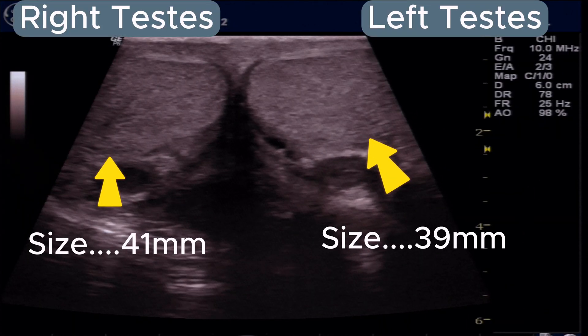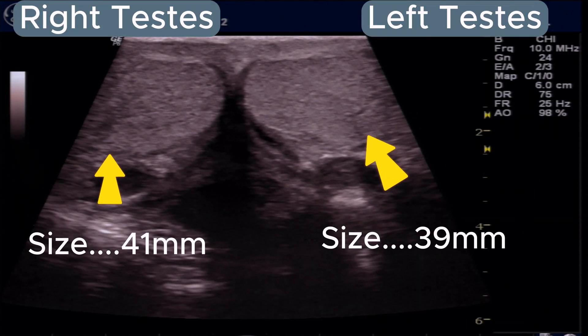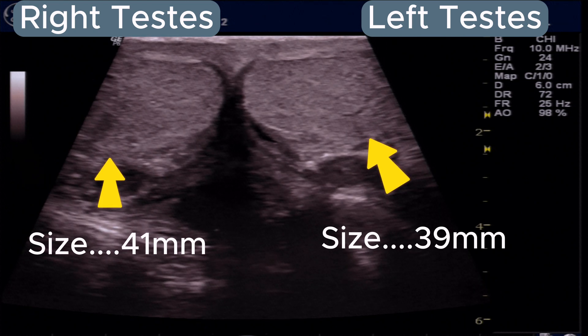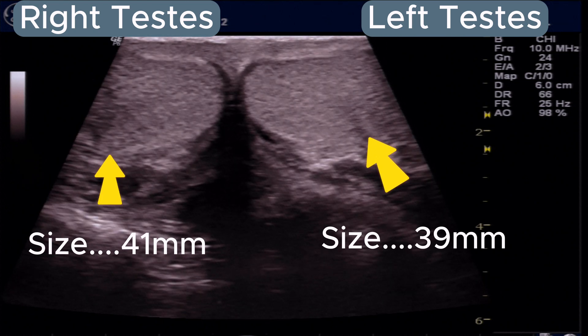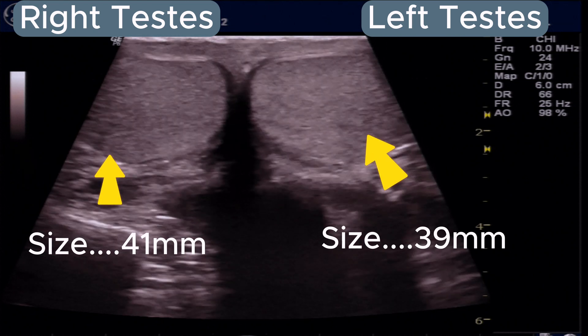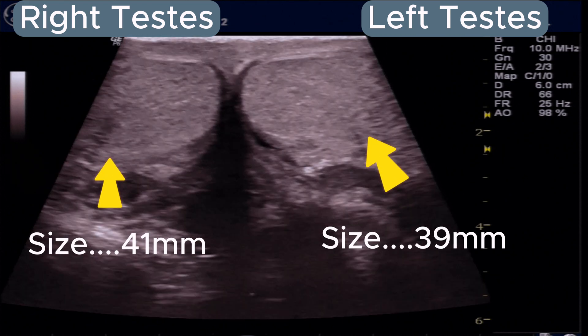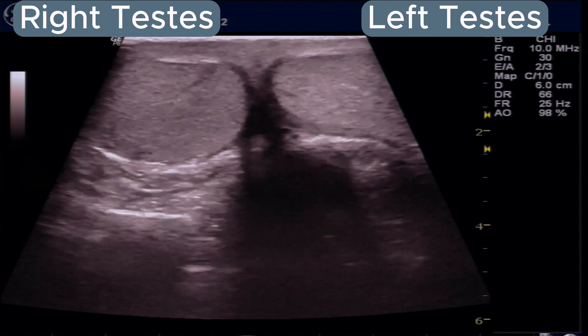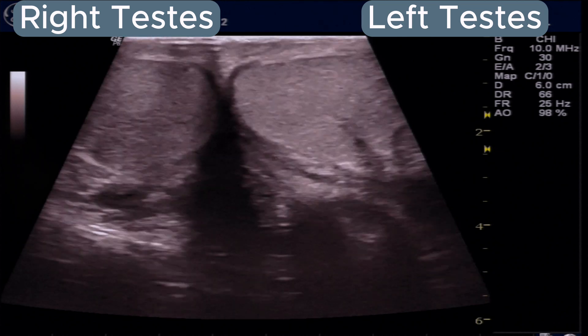In the transverse view we can see both testes. These are normal in size and echotexture. No mass or cyst is seen in the testes.